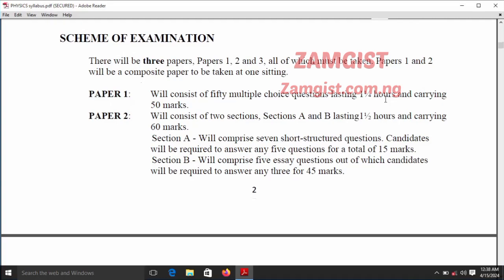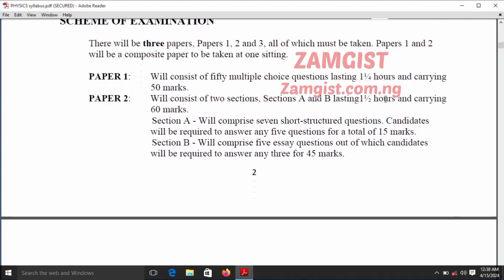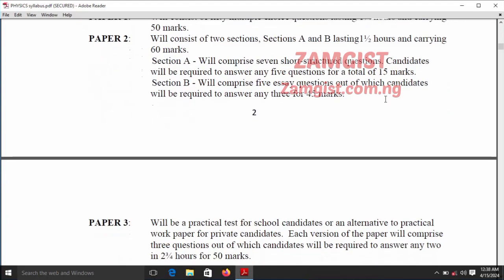Section B will comprise five essay questions out of which candidates will be required to answer any three questions for 45 marks. Five questions plus three making eight questions, which means you are to answer eight questions on the WAEC physics theory examination.